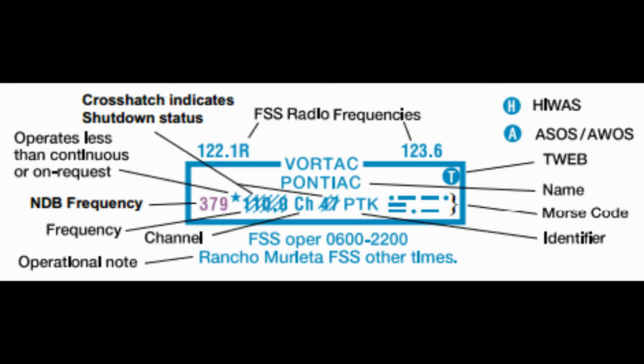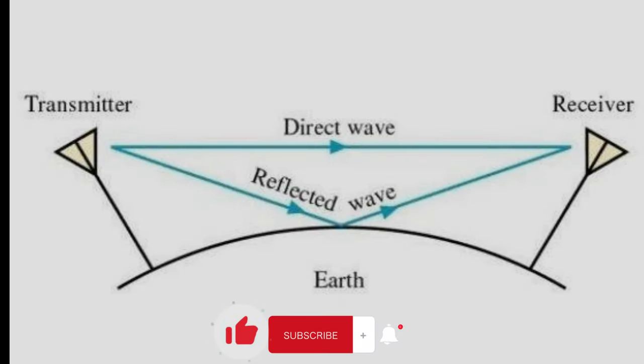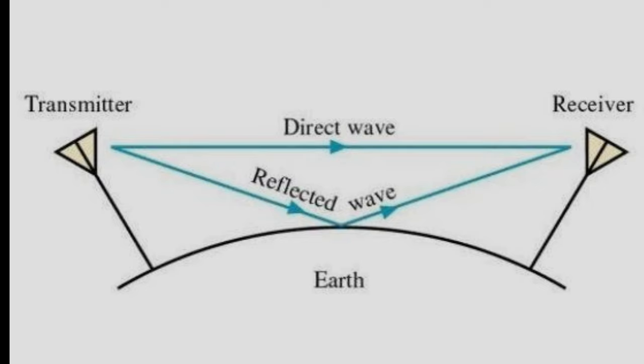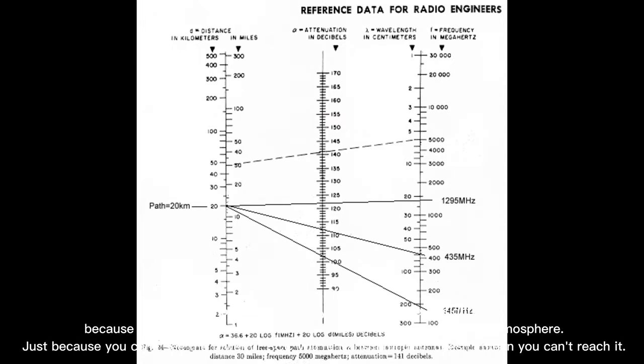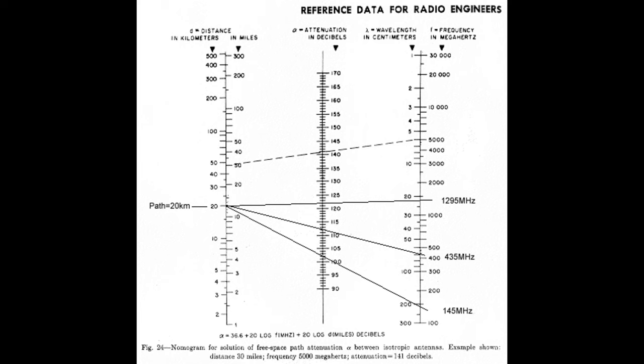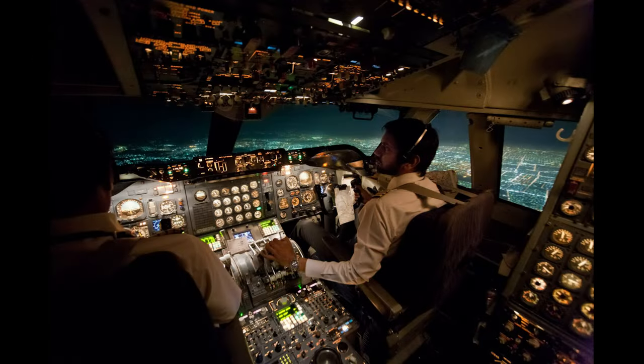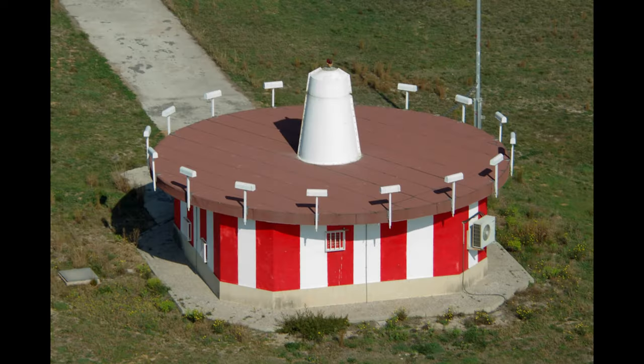A typical transmission range of an aircraft flying at 4,500 feet is about 100 miles; at 35,000 feet it's about 200 miles. VHF radio range is slightly better than line of sight because the radio waves are weakly bent back toward Earth by the atmosphere, so just because you can't see the tower or RCC you're transmitting to doesn't mean you can't reach it.